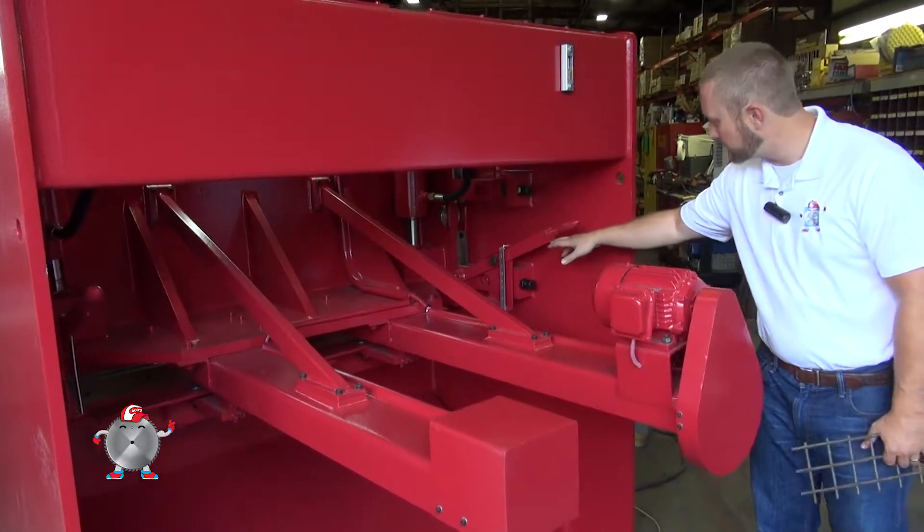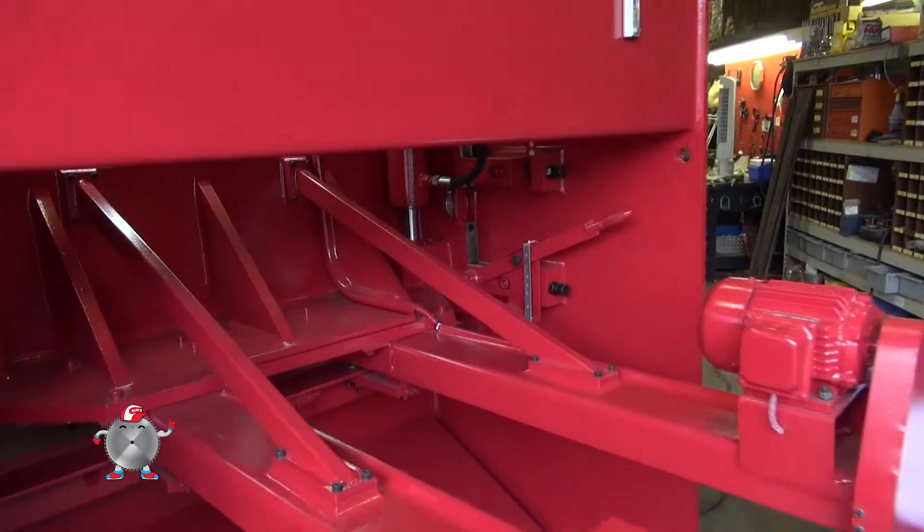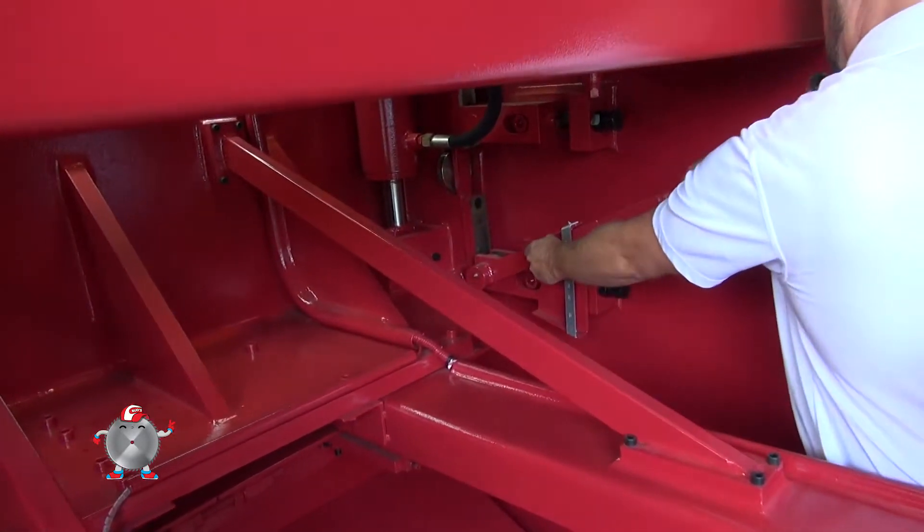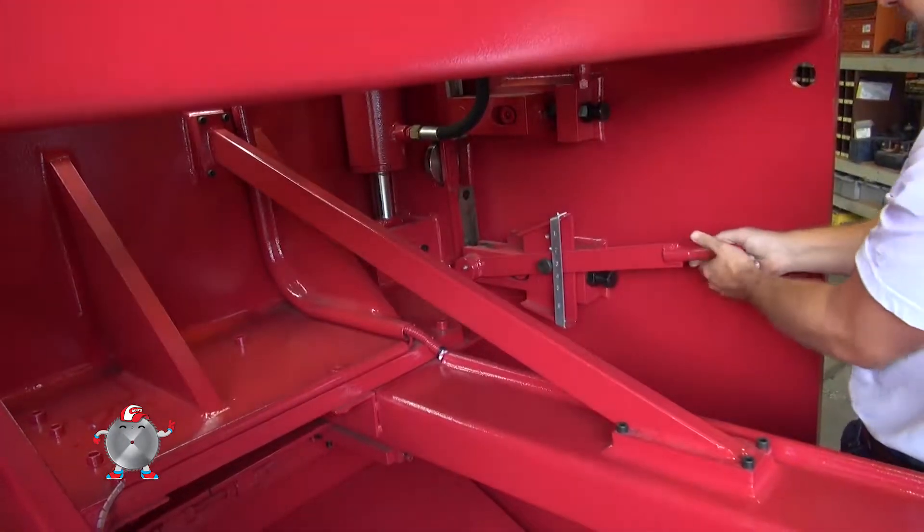You've got your variable rake. You've also got your blade gap adjustment back here, which is very simple and easy to change. Just pop that and adjust it wherever you need to.